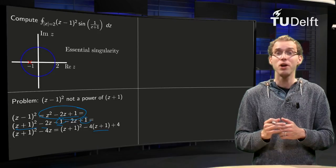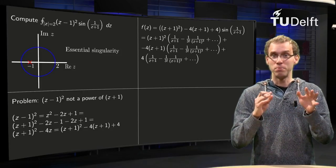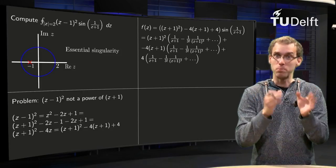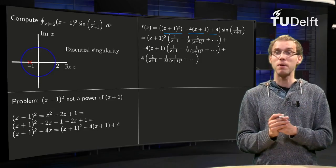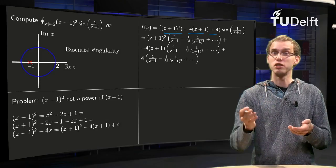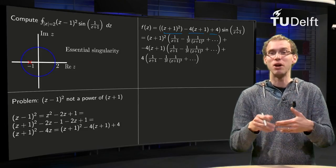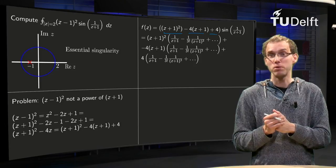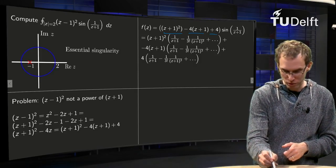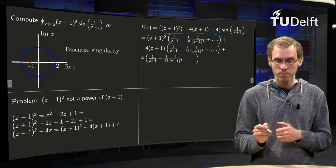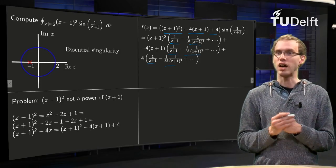Now we can form the Laurent series of our function. f(z) equals the expression (z+1)² - 4(z+1) + 4, times sin(1/(z+1)). We expand the sine using sin(x) = x - x³/3! + x⁵/5! - ..., but we only need the term with 1/(z+1), so we only need the first two terms. We multiply each of the three parts — (z+1)², -4(z+1), and 4 — by the first two terms of the sine.